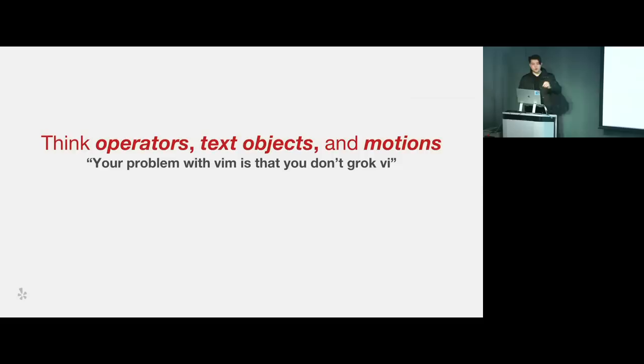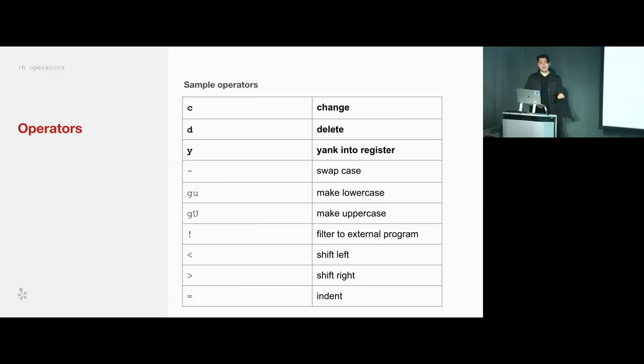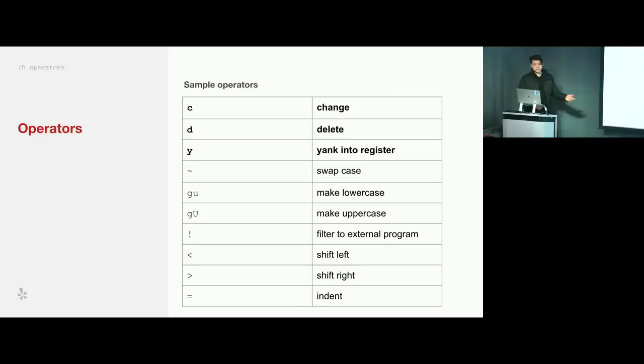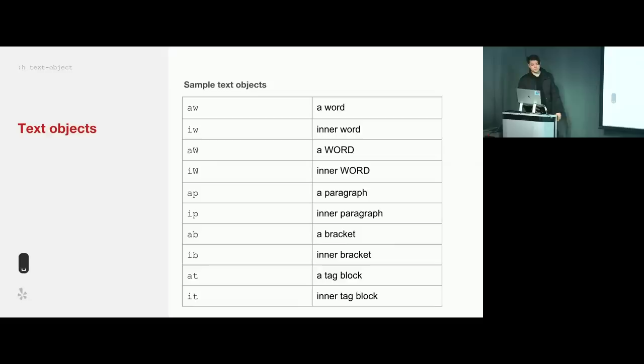Operators are the verbs of the Vim language — they specify actions to perform on text objects or motions. A lot are easy to remember: C to change, D to delete, Y to yank into a register. There are also more obscure commands like G capital U to make uppercase. Text objects are the actual visual discernible objects on your screen: AW for a word, AP for a paragraph, IT for inside a tag block, AT for a tag block.